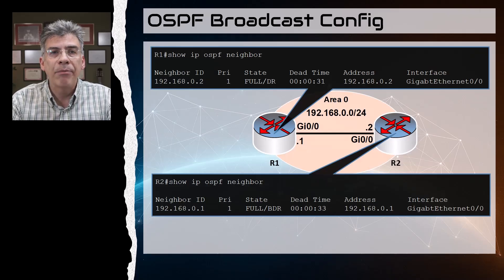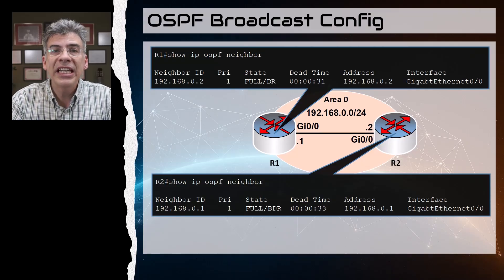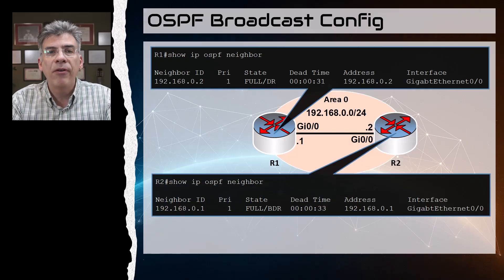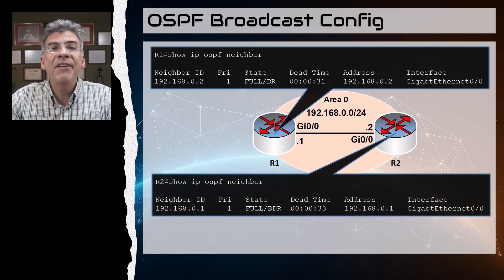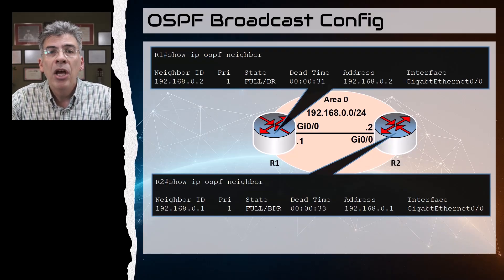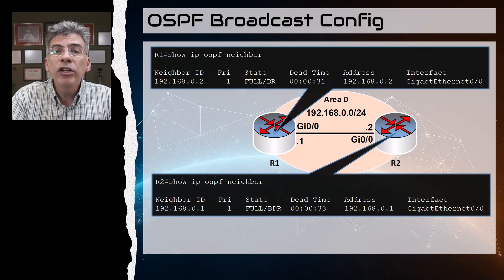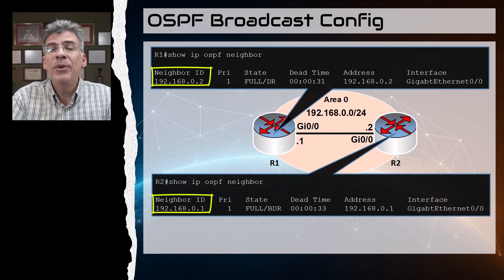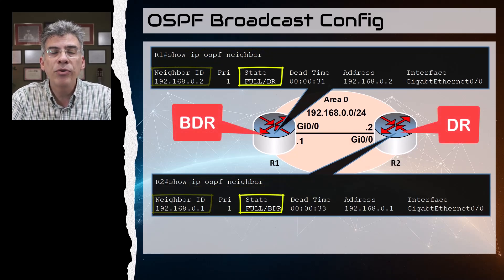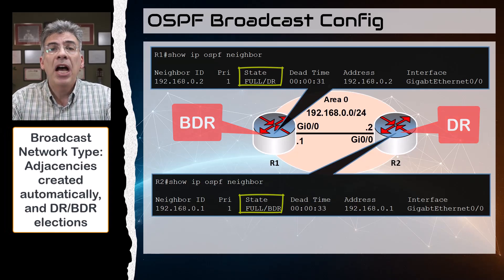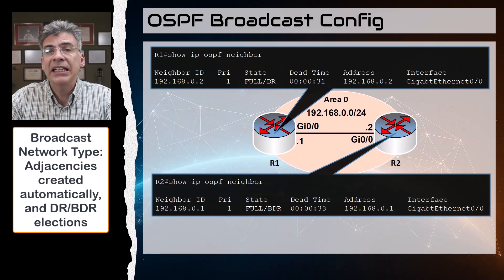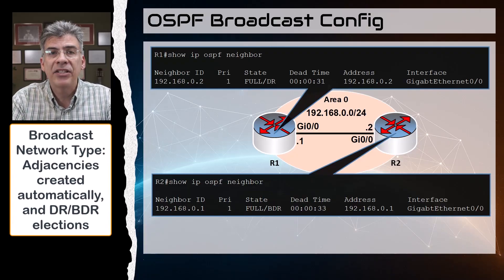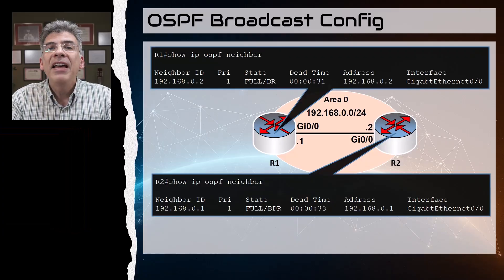Our first network type is broadcast. To get this to work we don't actually have to do anything, since we are using Ethernet interfaces — broadcast is the default. The result is that these devices become OSPF neighbors and take part in an automatic DR/BDR election. We can see the results by looking at the output of this command: neighbor adjacencies are created automatically and a DR/BDR election takes place automatically.